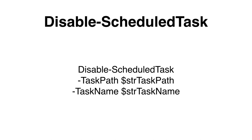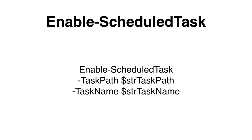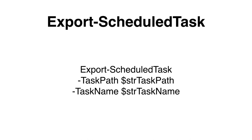If we would like to disable a registered task, we can use the Disable-ScheduledTask cmdlet and specify the TaskPath and TaskName parameters. We can enable a registered task just as easily with the Enable-ScheduledTask cmdlet. If we want to export a task in XML format, we can use Export-ScheduledTask, providing the TaskPath and TaskName parameters. We can then use Set-Content, the greater-than character, or pipe the object to the Out-File cmdlet to write the exported information to disk.